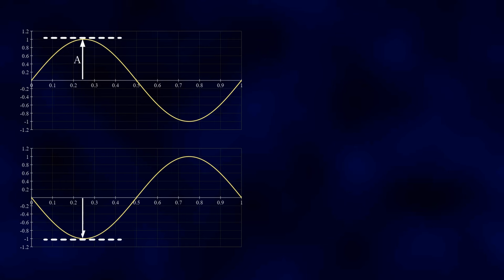Magnitude and amplitude mean similar things, but they are not the same. Amplitude can be positive or negative, while magnitude is always positive.